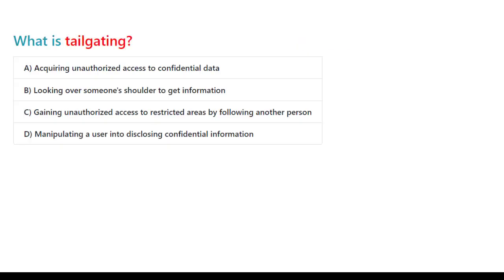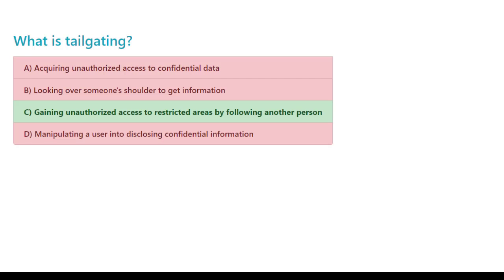What is tailgating? A. Acquiring unauthorized access to confidential data. B. Looking over someone's shoulder to get information. C. Gaining unauthorized access to restricted areas by following another person. D. Manipulating a user into disclosing confidential information. The correct answer is C. Gaining unauthorized access to restricted areas by following another person.